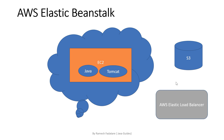If we don't use Elastic Beanstalk service, then we need to manually do all the steps: first create an EC2 instance, install Java or Tomcat on top of it, create a bucket in S3 to store the JAR or WAR file, and configure AWS Elastic Load Balancer. Elastic Beanstalk service provides all these resources to run our application on AWS cloud automatically.